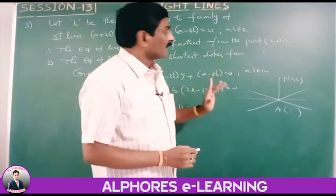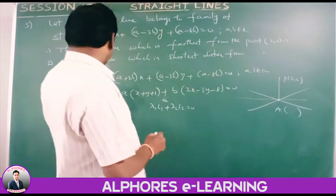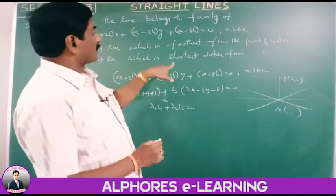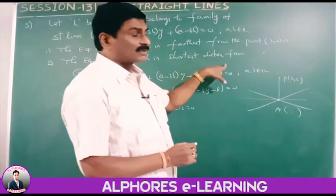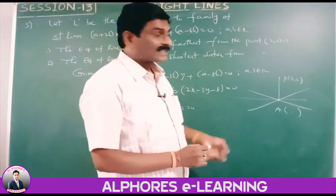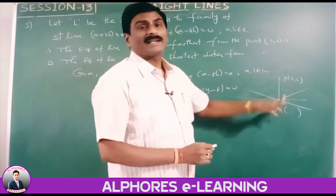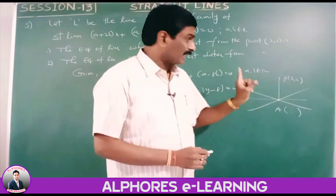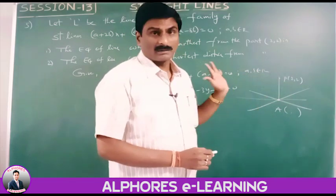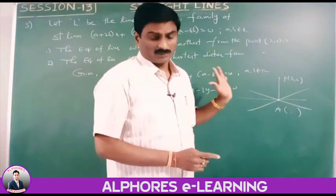The required farthest line is perpendicular to AP. The line of shortest distance from P is the line AP itself, since shortest distance is zero when the line passes through P.